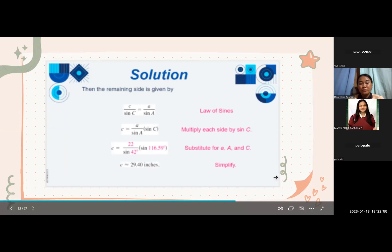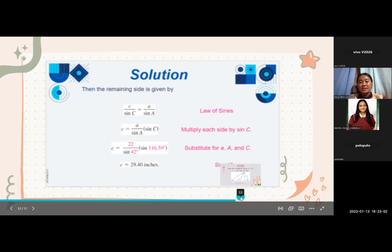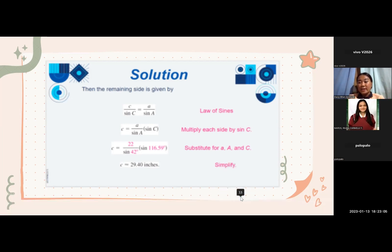Then, we get c is equal to a over sine A times the quantity of sine C. So, multiply each side by sine C, then it will lead us to c is equal to 22 over sine 42 degrees times sine 116.59 degrees. So, if we substitute for a, angle A and angle C, then it will lead us to side c, which is approximately 29.40 inches.